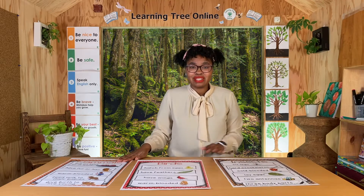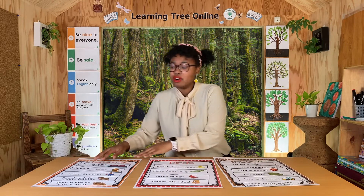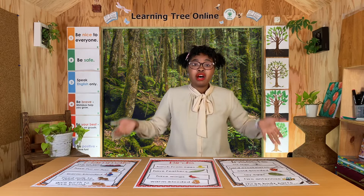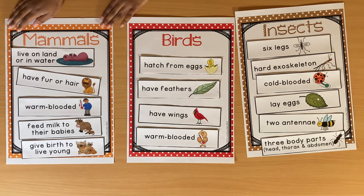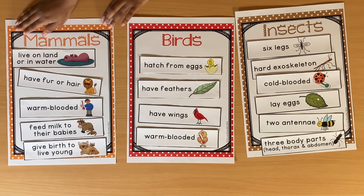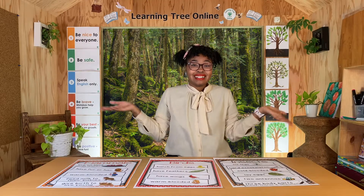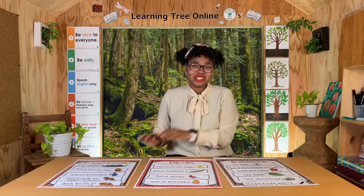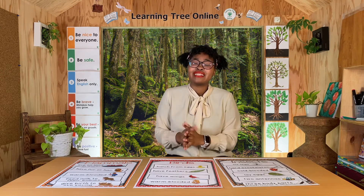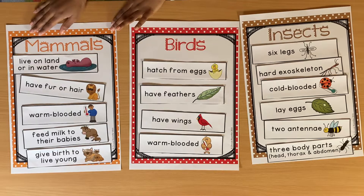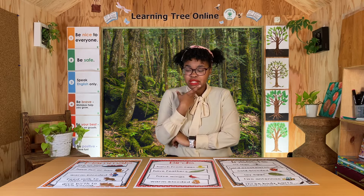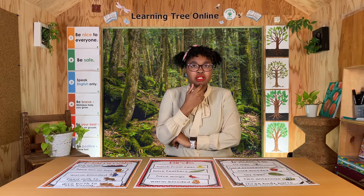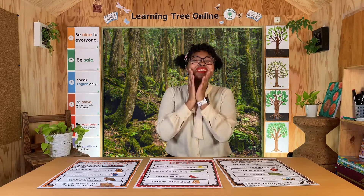Wow, look at all the things we learned today! Before we go, let's think of an example of each classification. Can you think of an animal that is a mammal — something that has fur and has live babies? I know — hamsters! I have two hamsters and they are very cute. Can you think of another mammal? Something that can live on the land or water, has fur, and gives milk? A giraffe would be a mammal!